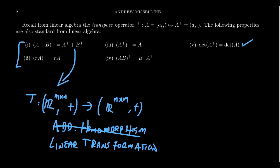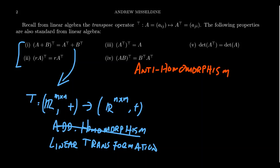The determinant is not affected by the transpose. You can see this from the usual Laplace cofactor expansions — you can cofactor expand along any row or column, and switching rows and columns doesn't affect the determinant. The transpose also satisfies the so-called shoe-sock principle: (AB) transpose equals B transpose times A transpose. With respect to matrix multiplication, this is not a homomorphism but what's called an anti-homomorphism — it's homomorphic except it switches the order of the product. The inversion map of a group is, in fact, an example of an anti-homomorphism.